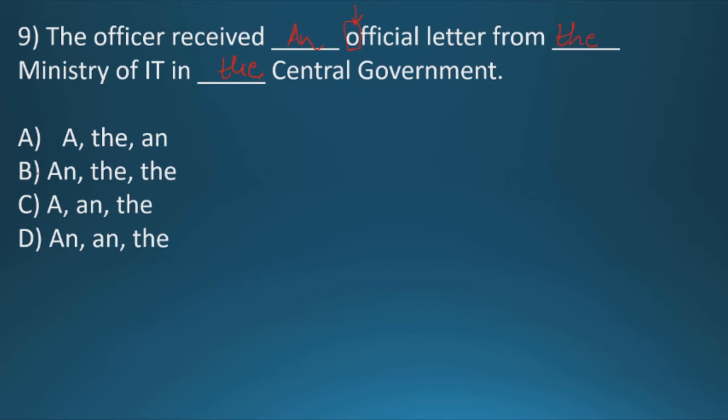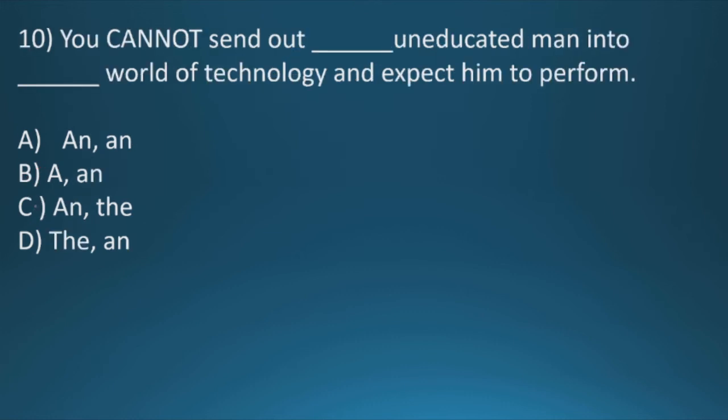Question ten: You cannot send out dash uneducated man into dash world of technology and expect him to perform. Here it is U, so an will come here. You cannot send out an uneducated man into, there is only one world, so here it will come the, man into the world of technology and expect him to perform. So our correct option will be C, an and the.